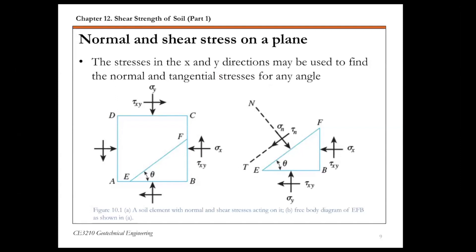We'll start with normal and shear stress on a plane. This is a soil element subjected to a combination of normal and shear stresses. On the top horizontal plane, you have vertical downward compressive stress sigma y and shear stress tau xy. On the vertical plane, you have compressive normal stress sigma x and shear stress tau xy.